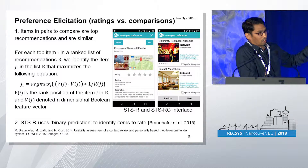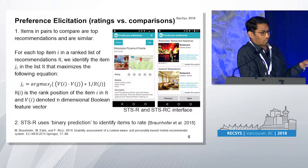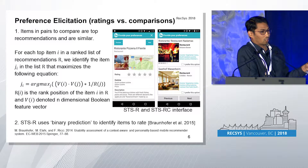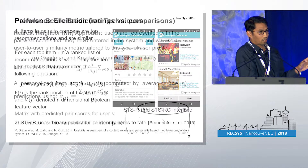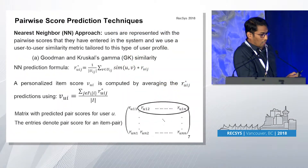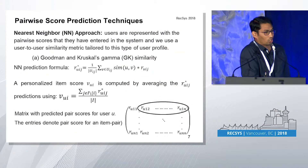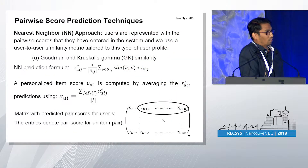Our variant differs from the baseline with an active learning strategy, an additional graphical interface, and a recommendation technology. In order to predict the missing comparison, we used a user-based nearest neighbor technique.